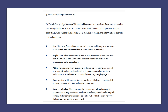The third and final principle is: focus on realizing value from AI. In the book 'Data Is Everybody's Business,' the authors spell out five steps in the value creation cycle, explained through a healthcare example — predicting which patients in a hospital are at high risk of falling and intervening to prevent it. The first step is data, which comes from multiple sources such as medical history from electronic health records and current data from medical devices at the bedside. The second step is insight, where AI enters the picture to analyze the data assets and predict who faces a high risk of a fall.